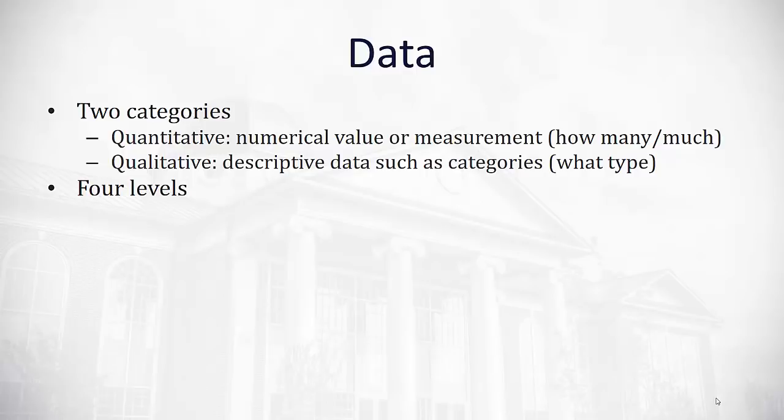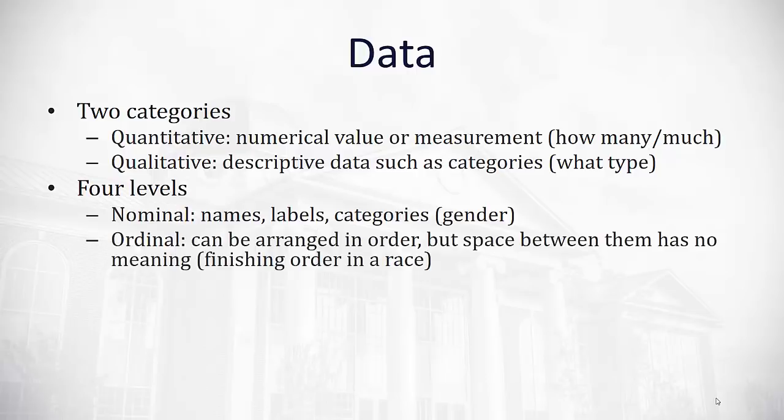Now as we collect data, the higher level of data that we have, the more calculations we can do with it. So it's important we know what we're working with. The first type of data is nominal data. Data in categories, names, labels. An example of nominal data would be gender or color. For example, what color are the cars in the parking lot? That is nominal data because we can't calculate things like an average with nominal data. We don't have numbers. We just have categories.